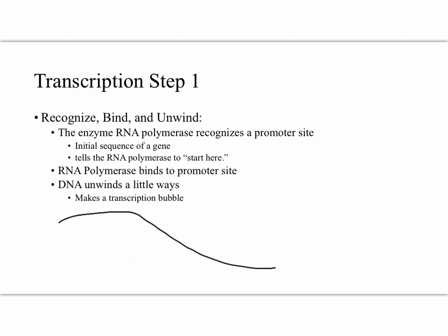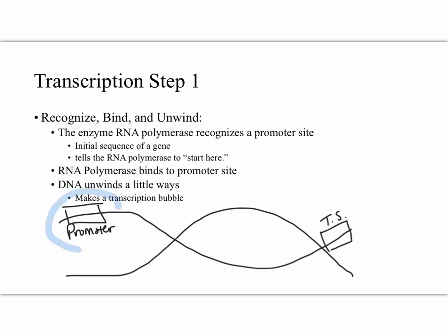The first step of transcription is to recognize and bind. Here's our piece of DNA. At the beginning of this gene there is a promoter site. This is the start of the gene. Remember at the end of the gene there is also a termination sequence. Our enzyme RNA polymerase will attach to the promoter site and bind to that DNA. The RNA polymerase will also unwind a piece of the DNA just a little bit so it can read the message inside.